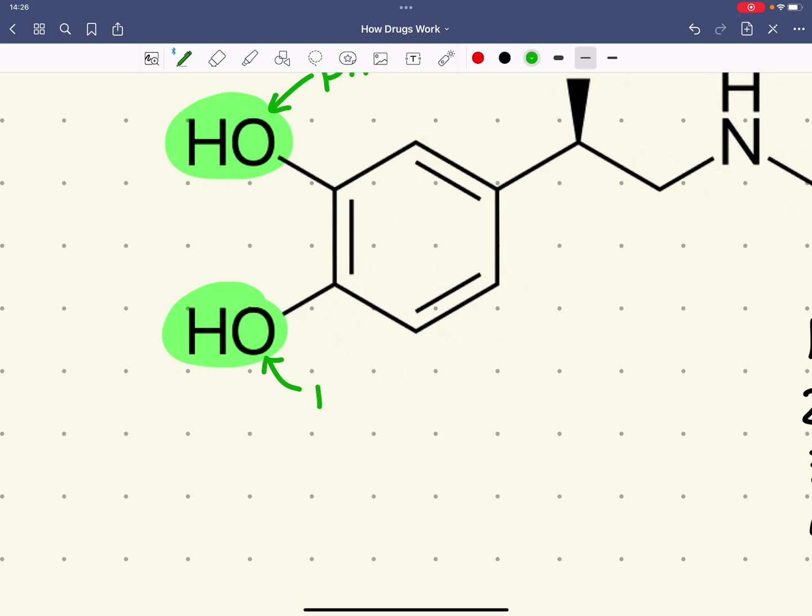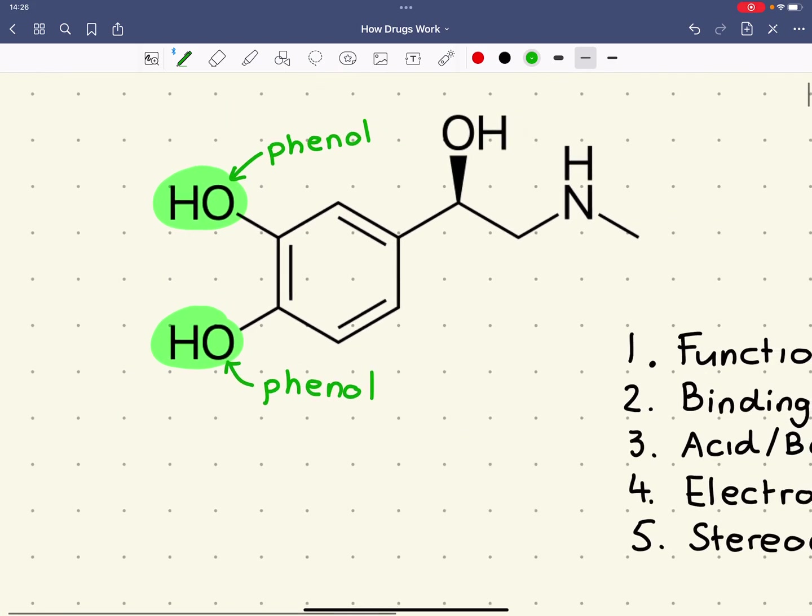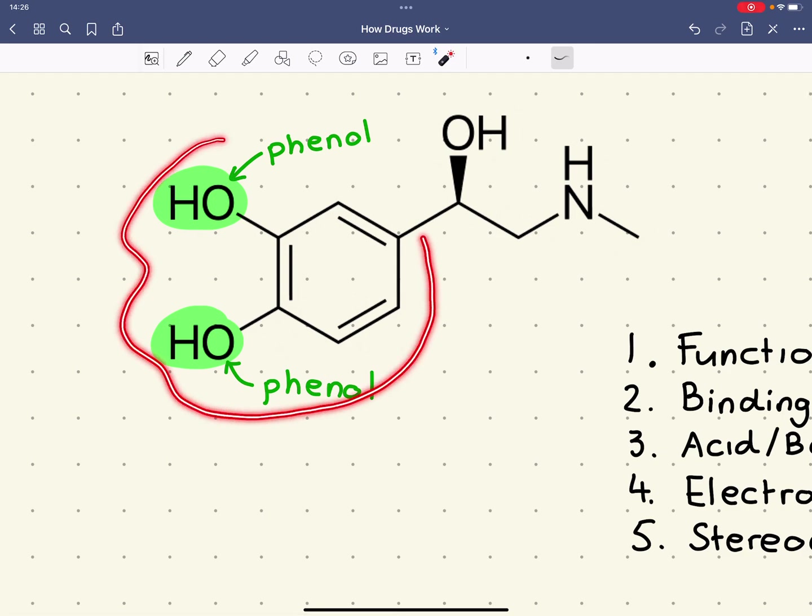Now, it just so happens that what we've got here is this benzene ring with these two OHs is actually called catechol. The IUPAC name would be 1,2-dihydroxybenzene, but this here is catechol.